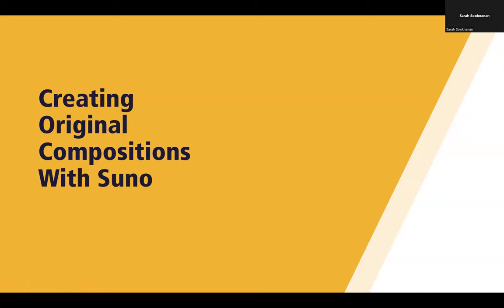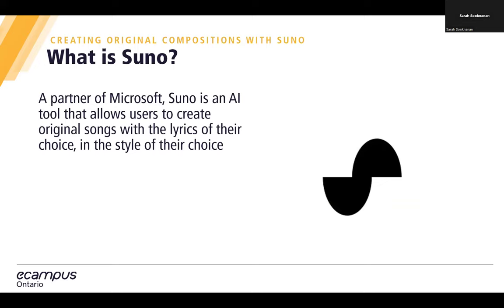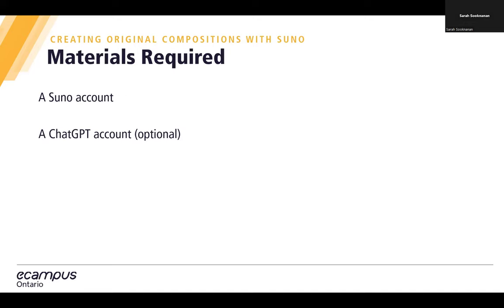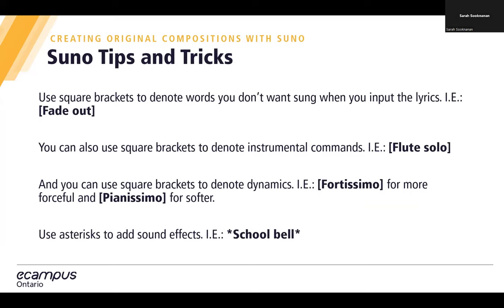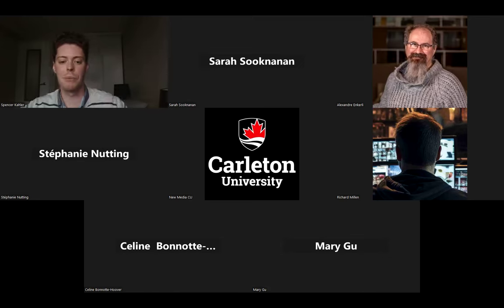If you're more interested in creating original compositions, I'll show you how to do that with Suno. Suno is a partner of Microsoft and an AI tool that allows users to create original songs with the lyrics of their choice in the style of their choice. Materials required are simply a Suno account and an optional ChatGPT account for generating lyrics. We'll get into tips and tricks for using Suno after a brief tutorial.